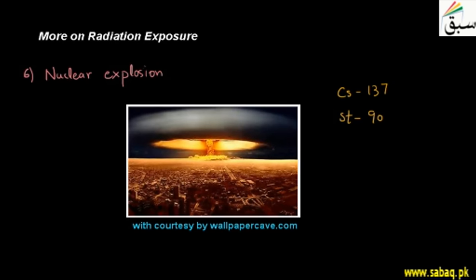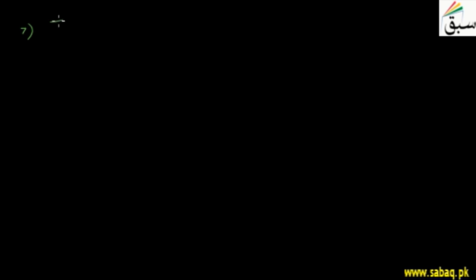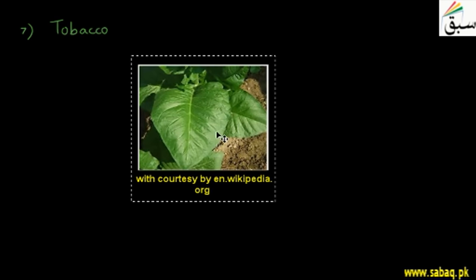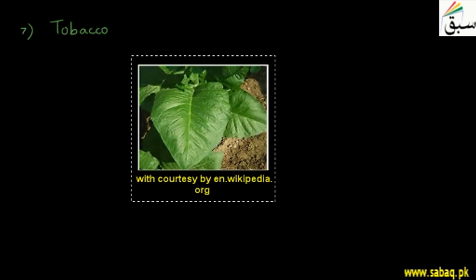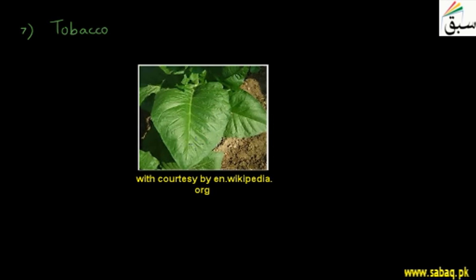The seventh source is called tobacco. Tobacco leaves are such a material which is used to make cigarettes. You can see that these are tobacco leaves. Tobacco leaves absorb a very large amount of radioactive rays. When cigarettes are made and smokers smoke them, they emit radiation that has very harmful effects on the smokers.